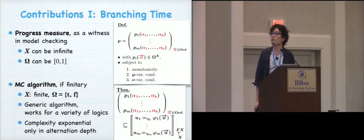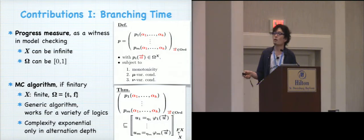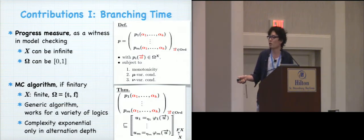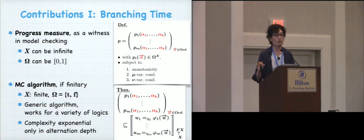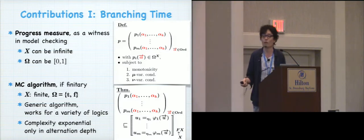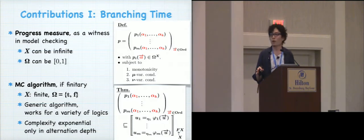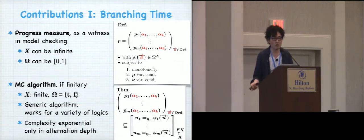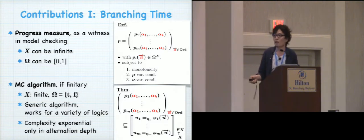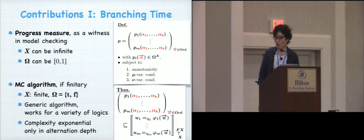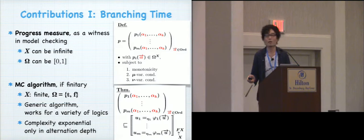Then the first class of our contribution is these ones. So we adopt the notion of lattice theoretic progress measure for this model-checking problem. And then this is the notion of a progress measure, and then it witnesses the truth value of this fixed-point formula interpreted in this coalgebra. And this works for an arbitrary setting, so x can be infinite, this truth value can be continuous, and so on. But then, if we restrict this work, this result to our finitary setting, then we actually get a model-checking algorithm. And it's a generic one that works for graded logic, for Hennessy-Milner logic, for neighborhood logic in a uniform way. And we also have a complexity result that is exponential only in alternation depth, which is typical complexity in many model-checking algorithms.